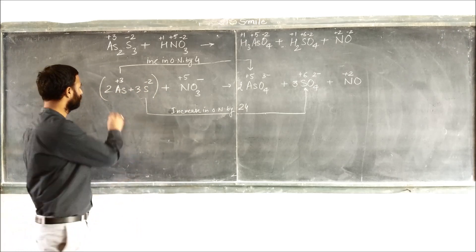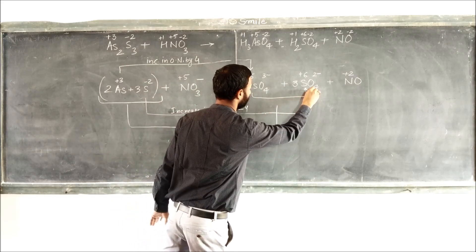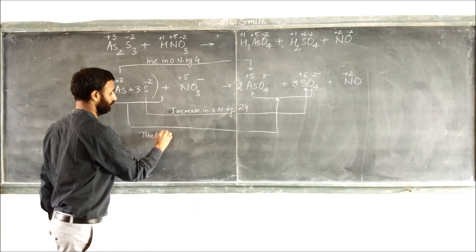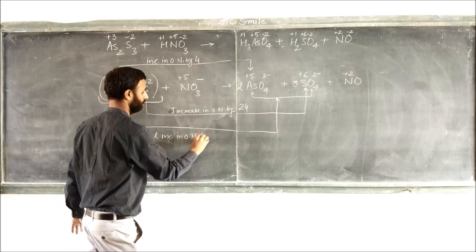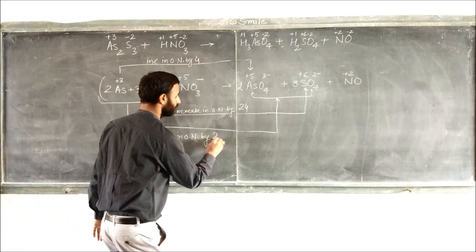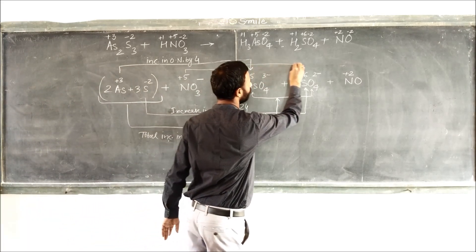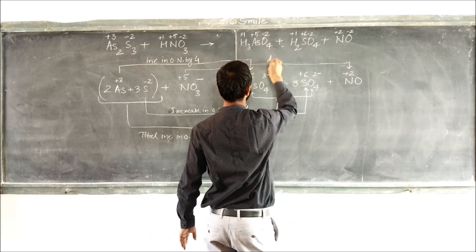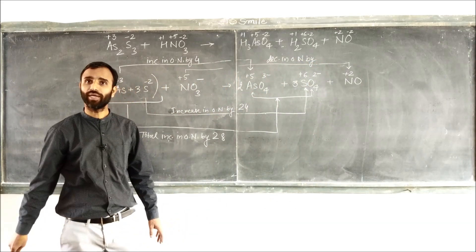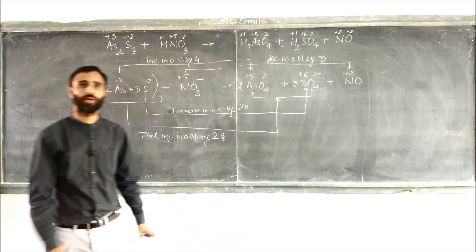That means total increase in oxidation number is 28. Now nitrogen, plus 5 to plus 2, decrease in oxidation number by 3.